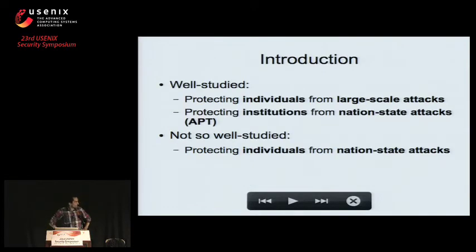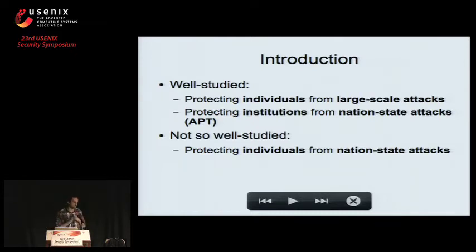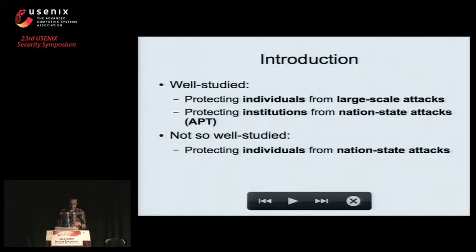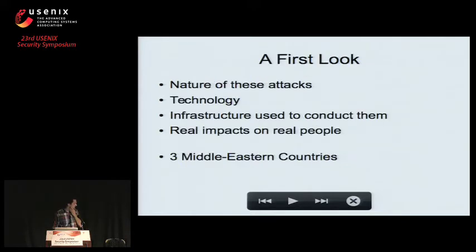This paper is about protecting individuals from nation-state attacks. This is in contrast to areas which have received much more attention in the research community recently — for example, protecting individuals from large-scale attacks conducted by cyber criminals, or attacks on institutions from nation-states, otherwise known as APT. These have been fairly well-studied, but protecting individuals from nation-state attacks has received comparatively little attention. This paper presents a first look at this space.